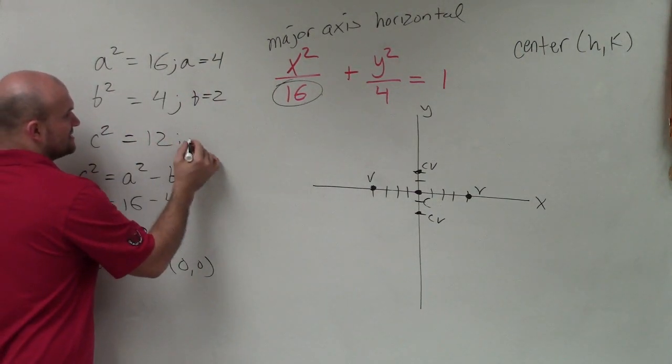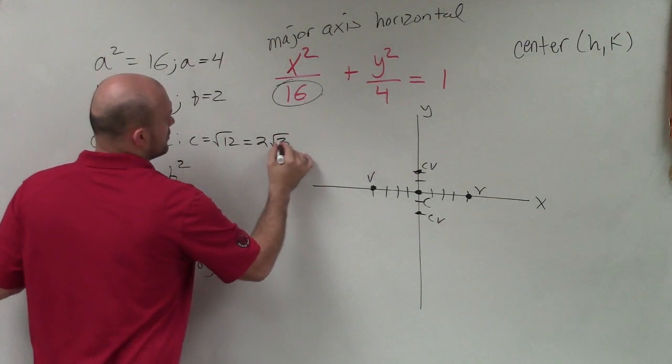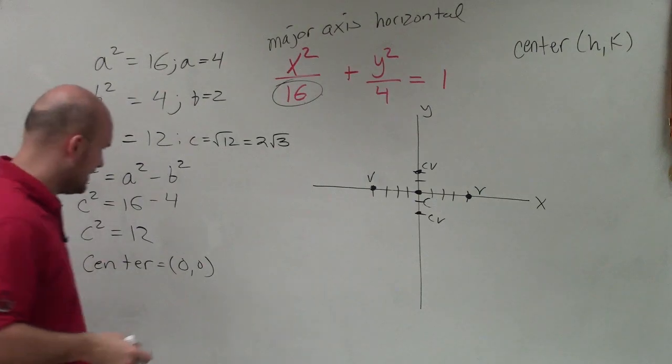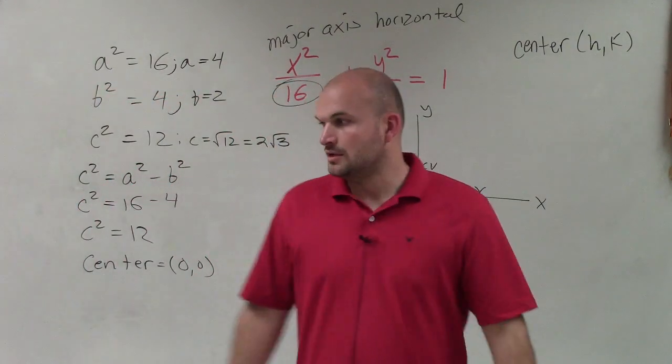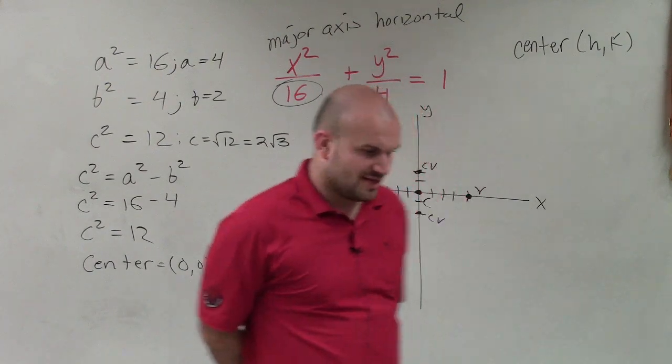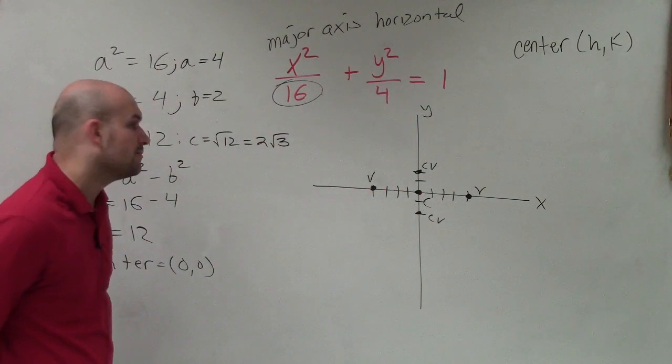So in this case, I'm going to say c is equal to the square root of 12, which is equal to 2 square root of 3, and square root of 12, 2 square root of 3, so that's going to be between 3 and 4, roughly, right,